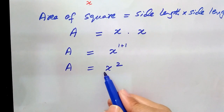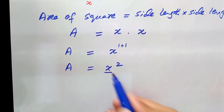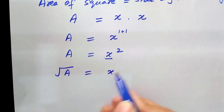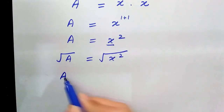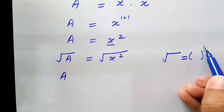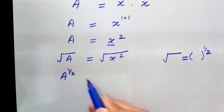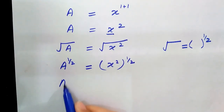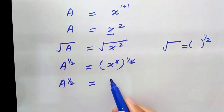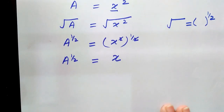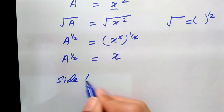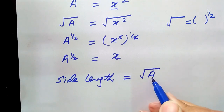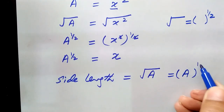To find x, we take the square root on both sides. The square root has exponent 1 over 2, so A raised to power 1/2 equals x squared raised to power 1/2. The exponents cancel, leaving just x. Therefore, the side length of a square equals the square root of area, which equals area raised to power 1/2.